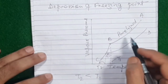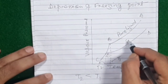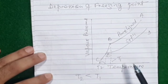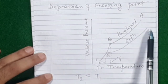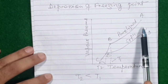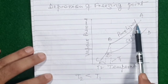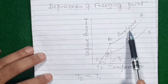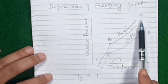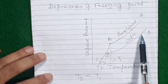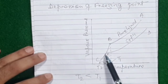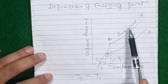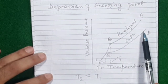This is the vapor pressure-temperature curve of the pure liquid, and beyond this point the pure liquid has frozen to become solid — this is the vapor pressure-temperature curve of the solid. At the point where the vapor pressure-temperature curve of the liquid meets that of the solid, that is the freezing point of the pure liquid, marked as T1.